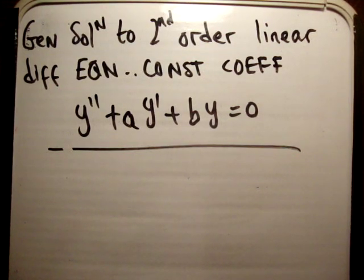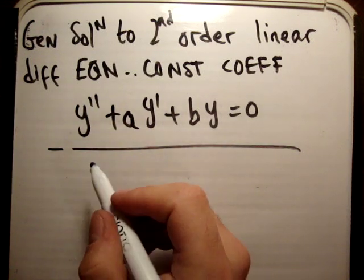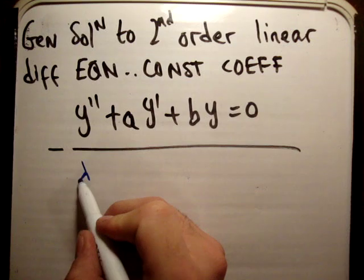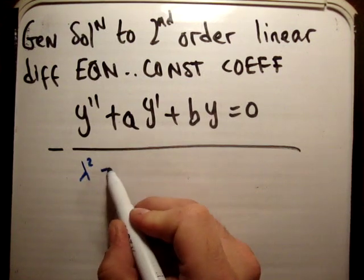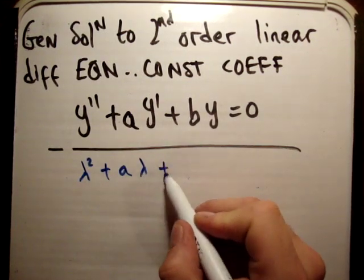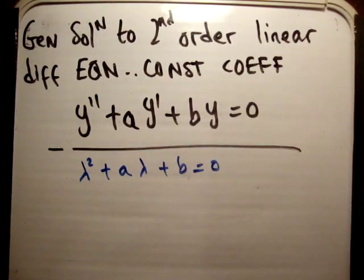So how do we solve this equation? The first thing we do is get its characteristic equation. The characteristic equation for this is going to be lambda squared plus a·lambda plus b equals 0.